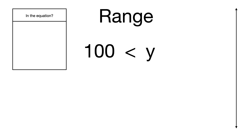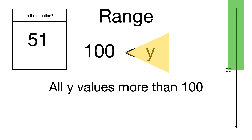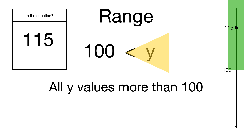Let's look at range written a different way — not between two values, just one value with more or less than. The inequality opens up towards y, which means y is more than 100, so the range is all y values more than 100, all the way to positive infinity. The number 51 falls outside the range, so no. The number 115 is more than 100, so yes it's included.